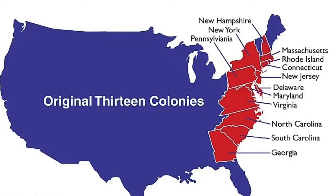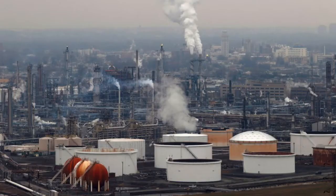The United States of America was a unique experimental design when it was founded. The attractors that held it together were the Declaration of Independence and the values it contained, and the U.S. Constitution, which established an innovative design of the people, by the people, and for the people. The rules that make it work have been kept as simple as possible: 1. We are born free and equal before the law. 2. We make the laws together. 3. Whatever changes the laws need, we decide together. Picture the United States today — a huge attractor that has worked for more than 230 years.